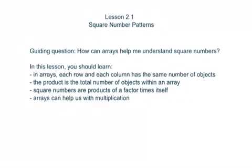In this lesson, you should learn: in arrays, each row and each column has the same number of objects. The product is the total number of objects within an array. Square numbers are products of a factor times itself. And arrays can help us with multiplication. Those are things that you should learn in this lesson.